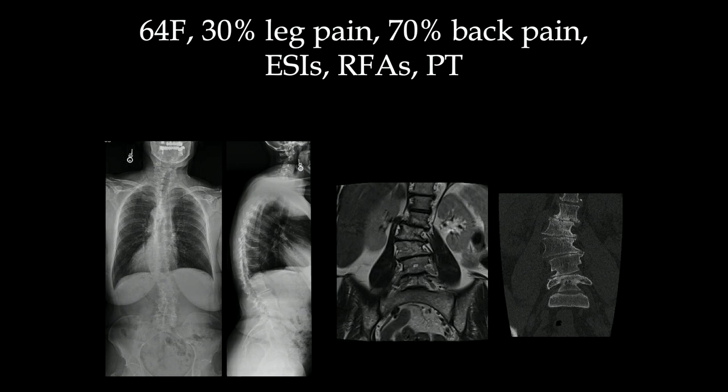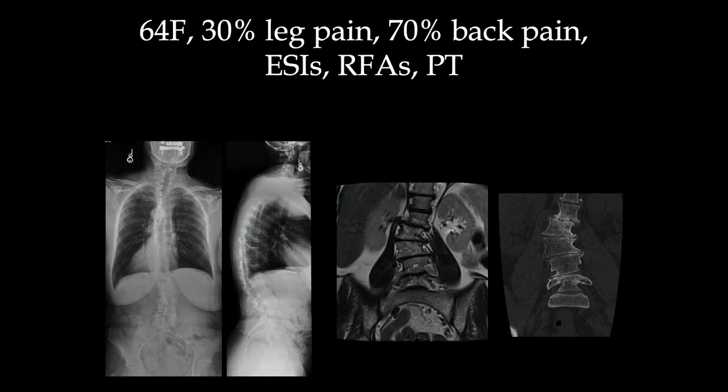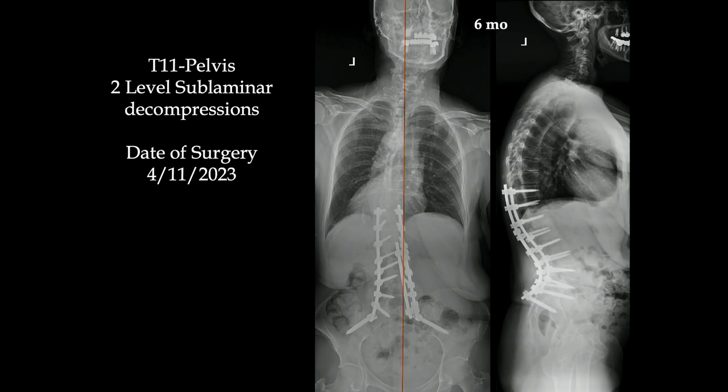Regarding sparing use of interbody — I still use a lot of interbody, usually TLIF approaches for single or two-level disease to optimize alignment. In adult deformity patients, the only time I use a transforaminal interbody approach is when too much bone has been taken away after decompression where I'm concerned about fusion. Here's a case of a 64-year-old with 30% leg pain and 70% back pain who failed all conservative management.